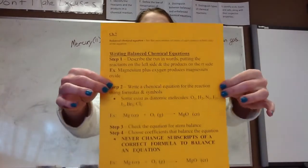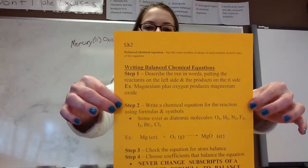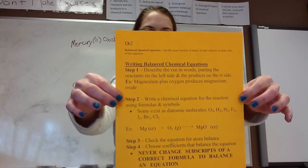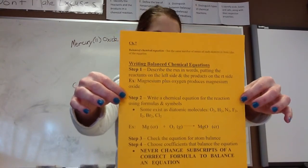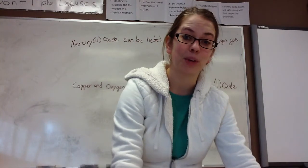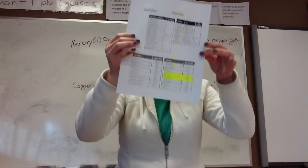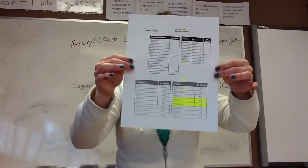This sheet might come in handy. It's a sheet of notes from Chapter 7 on the simple steps to writing a balanced chemical equation. But you will also need your periodic table and a list of common polyatomic ions.